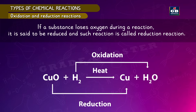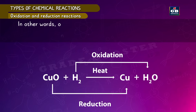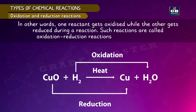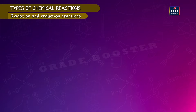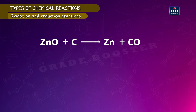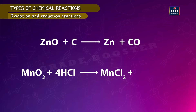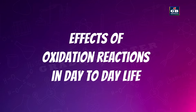In this reaction, copper oxide is reduced by losing oxygen while hydrogen gains oxygen and is oxidized. One reactant gets oxidized while the other gets reduced — such reactions are called oxidation-reduction reactions, or simply redox reactions. Examples: ZnO + C → Zn + CO; MnO₂ + 4HCl → MnCl₂ + 2H₂O + Cl₂.